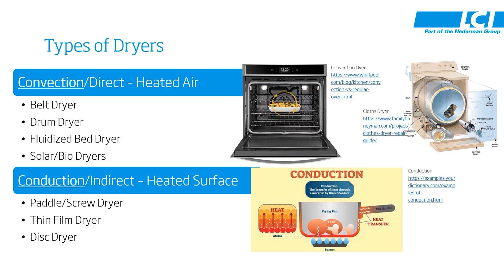When we look at a belt dryer, which is a direct dryer, it's most like a convection oven or more aptly a pizza oven. Both have air streaming, but in the case of a belt dryer we're evaporating water from sludge, and in the case of the convection oven we're cooking nice, good-smelling food.